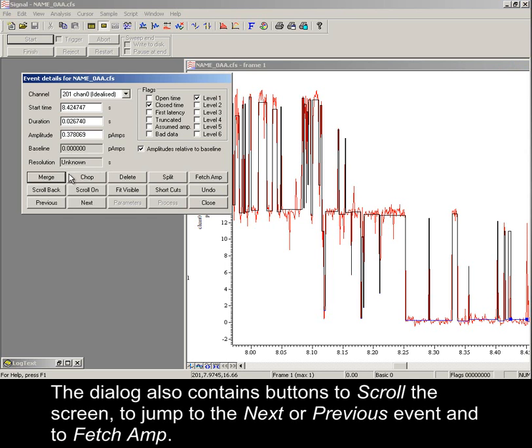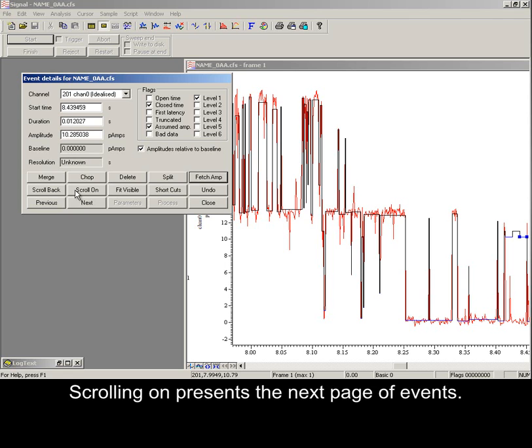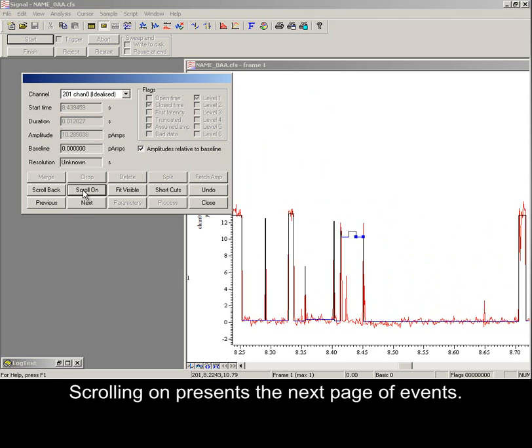The dialog also contains buttons to scroll the screen, to jump to the next or previous event, and to fetch amp. This scans backwards to find an event of the same type, and copy the amplitude of this previous event to the current event. Scrolling on presents the next page of events.